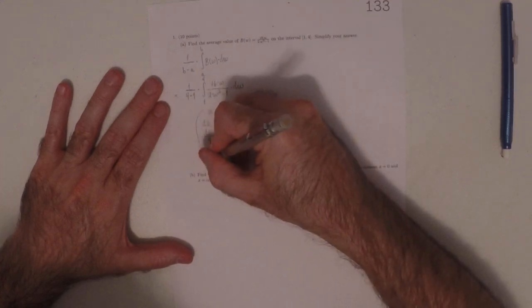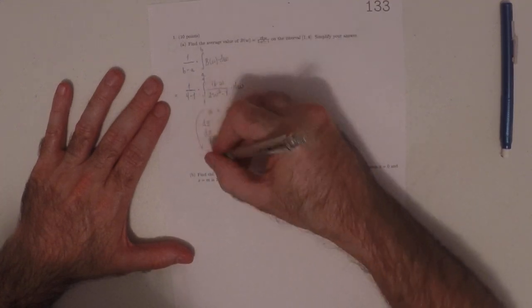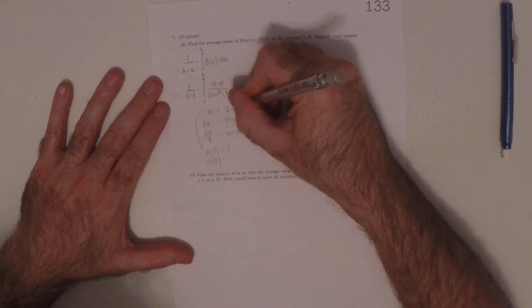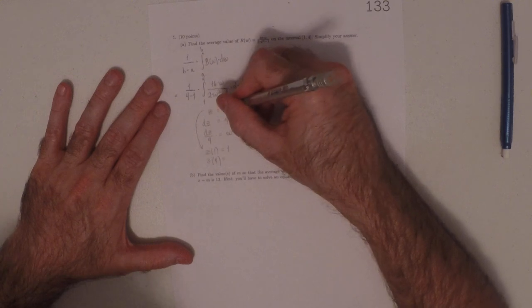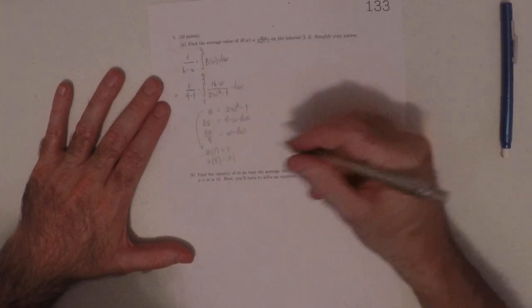And then z evaluated at 4. 4 squared is 16 times 2 is 32, subtract 1 is 31.